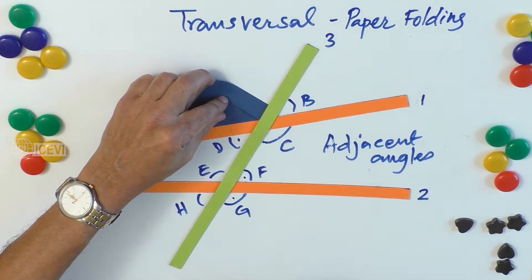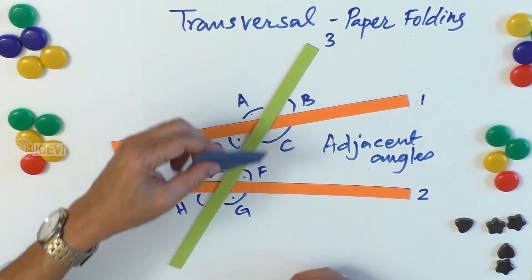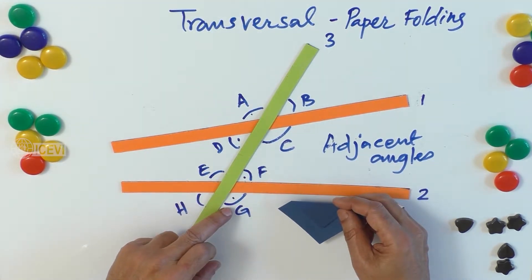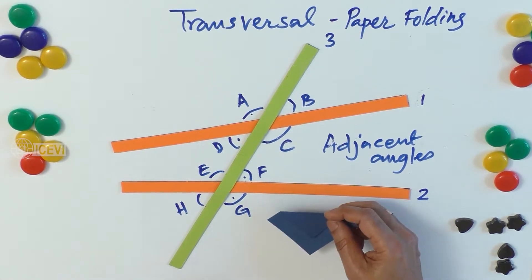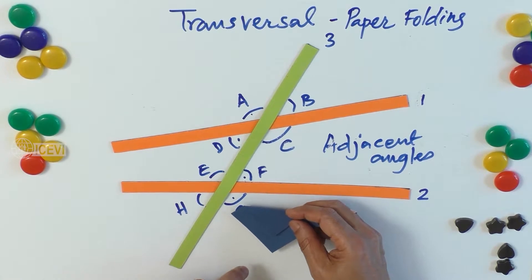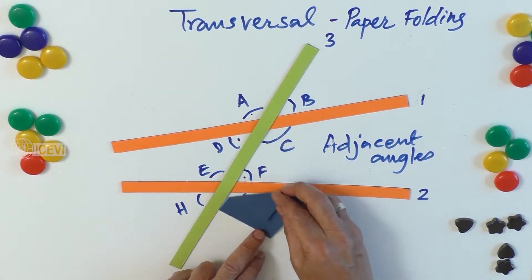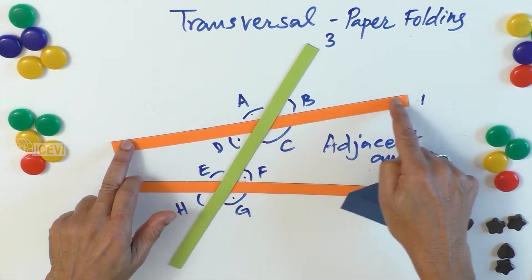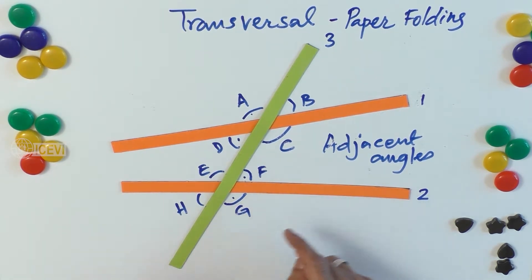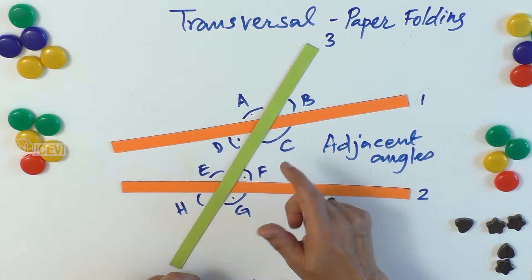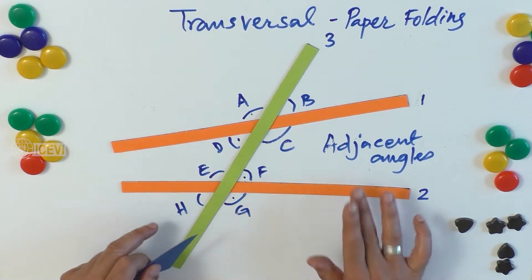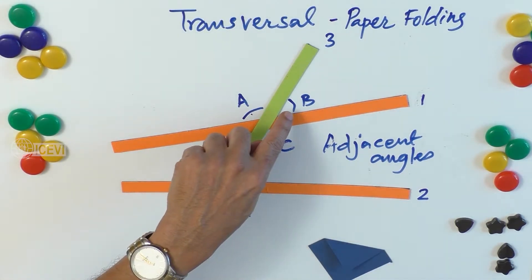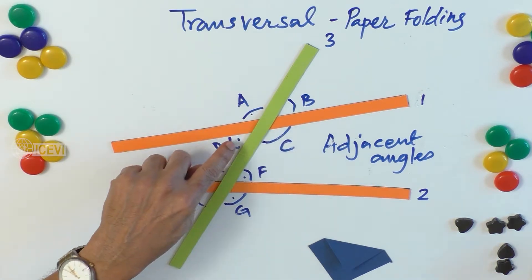We can notice that angle C is equal to angle A. Now, angle C and angle G are corresponding angles, but C cannot equal G because lines 1 and 2 are not parallel — you can notice that the angle is different. In the next example, let us see how corresponding angles become equal when the lines are parallel.